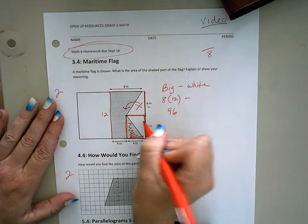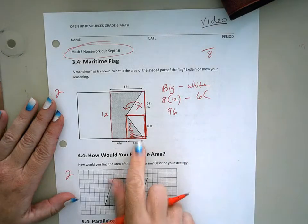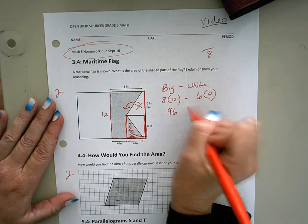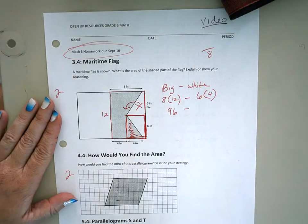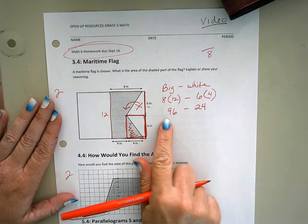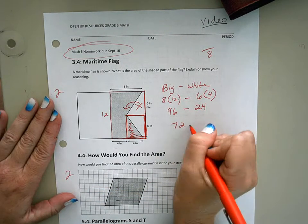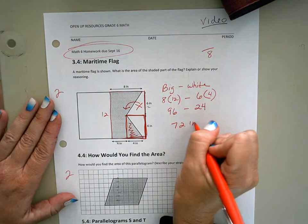So I'm going to subtract my base times my height, which in this case is 6 times 4. 6 times 4 is 24, and then 96 minus 24 is going to give me an area of 72 inches squared.